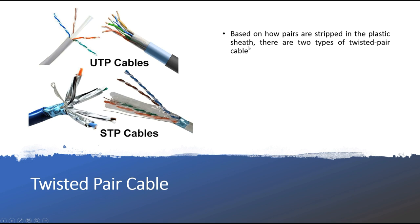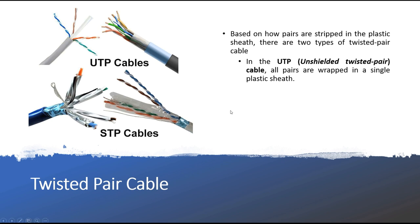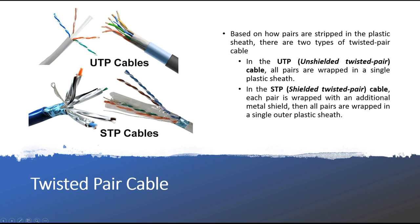Based on how the pairs are wrapped in the plastic sheet, there are two types of twisted pair cable. The first is UTP — Unshielded Twisted Pair — where all pairs are wrapped together in a single plastic sheath. The second is STP — Shielded Twisted Pair — where each pair is individually wrapped with an additional metal shield, and then all pairs are wrapped together in a single outer plastic sheet.